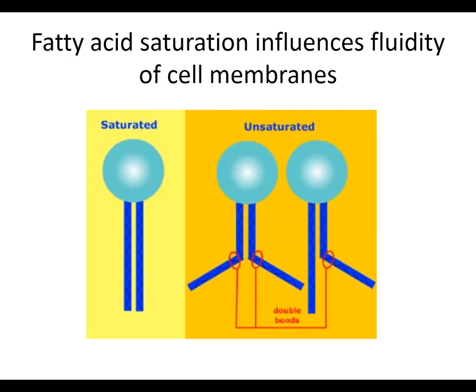It stands to reason. If all our phospholipids were straight, the phospholipids would be closer together. If they were bent, they'd take up more space, and the phospholipid bilayer would not hold as tightly. Does that make sense?